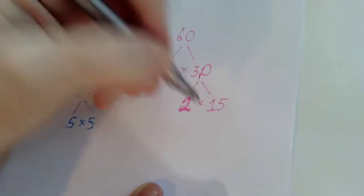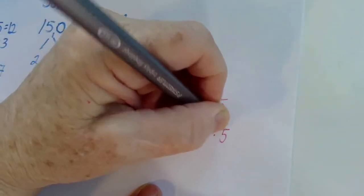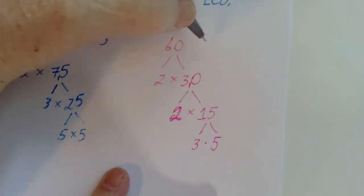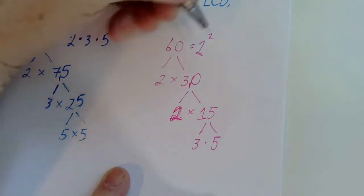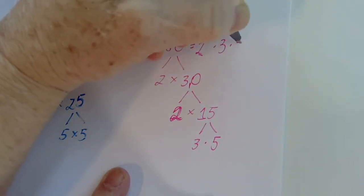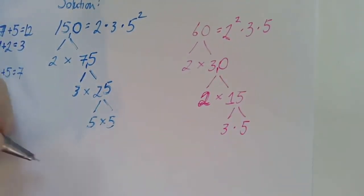Five is not even, but I know that 15 is three times five, so we get that 60 is two squared, because we have two twos, times three times five. And now we can look for the least common denominator.